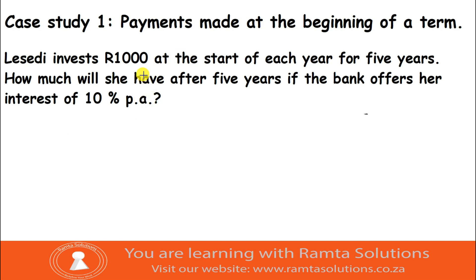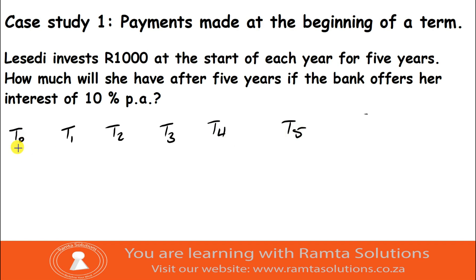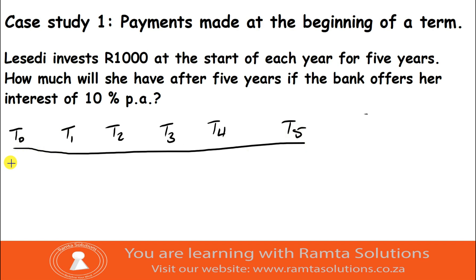Every year she is investing one thousand rand at the beginning of each year, so we have a timeline. Let's start with our timeline: t0, t1, t2, t3, t4, t5. At the start of the first year she is investing a thousand rand. At the start of the second year she is also investing a thousand rand.